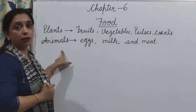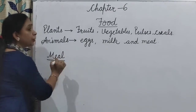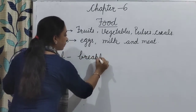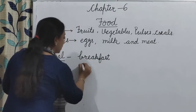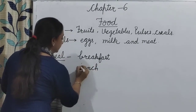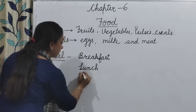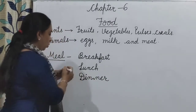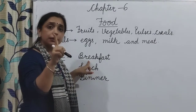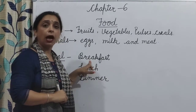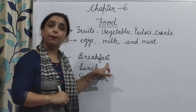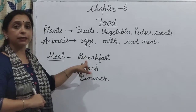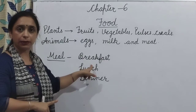Now we will know about meals. We should have three types of meal: breakfast, lunch, and dinner. Breakfast is the first meal of the day — our day starts with breakfast, so we must have a good breakfast because it gives us energy for the whole day. सारा दिन की energy हमें breakfast से मिलती है।